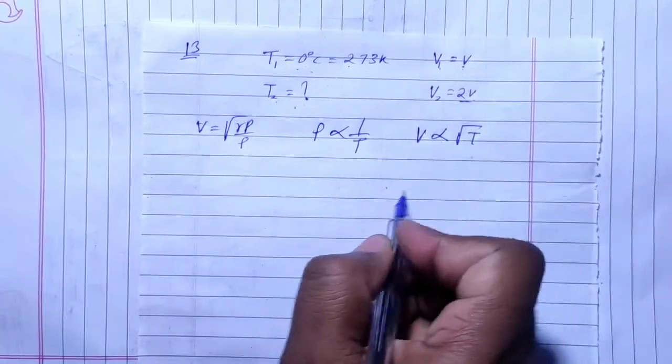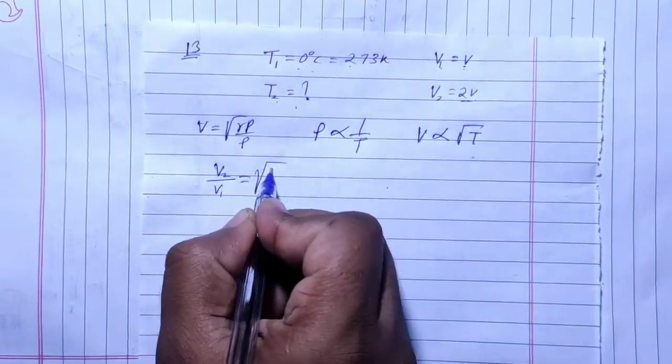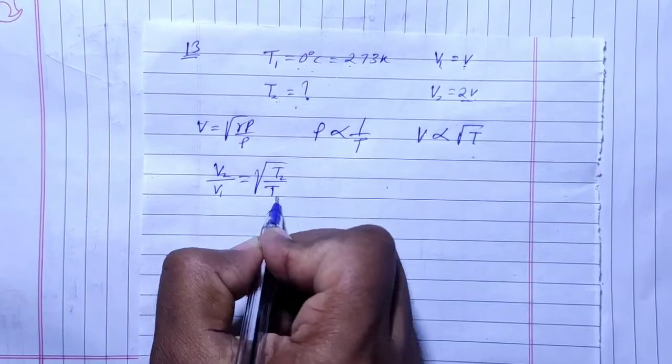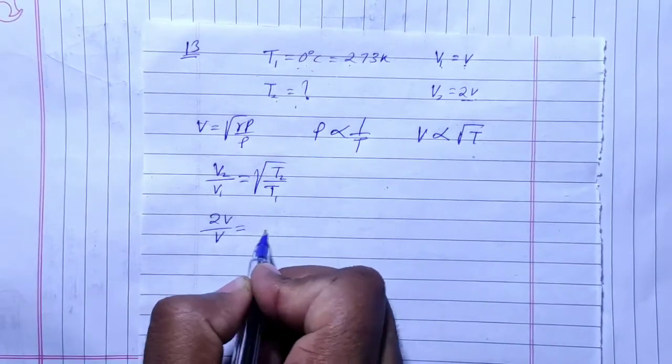You can see v2 by v1 is equal to root of T2 by T1. Putting values here, v2 by v is equal to root of T2 by T1.